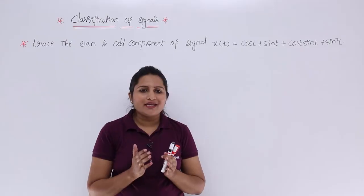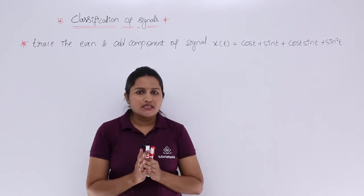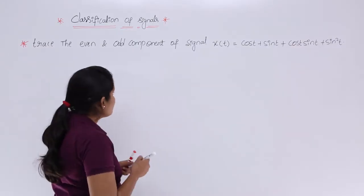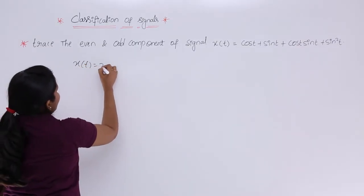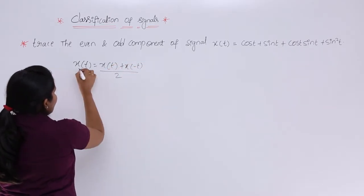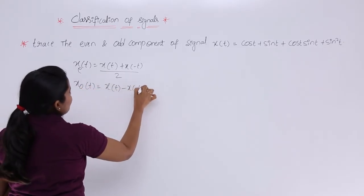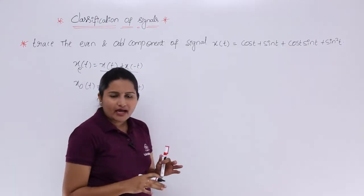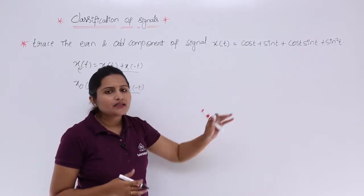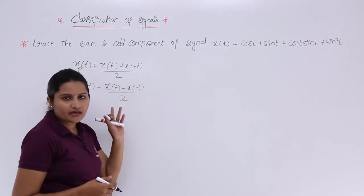For calculating even and odd components of a signal, the standard equations are: the even component xe(t) = [x(t) + x(-t)] / 2, and the odd component xo(t) = [x(t) - x(-t)] / 2. However, calculating by this process when this type of problem is given is very tedious — we need to substitute x(-t), consider addition or subtraction, and then halve the result.